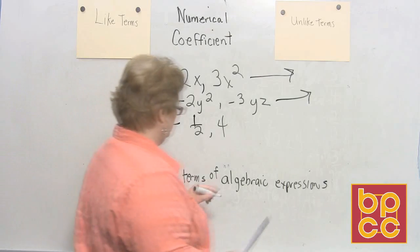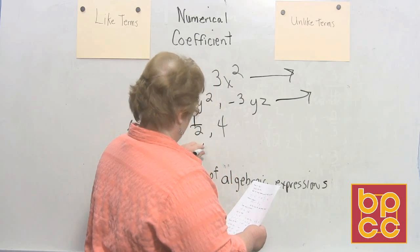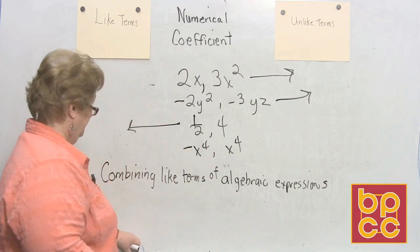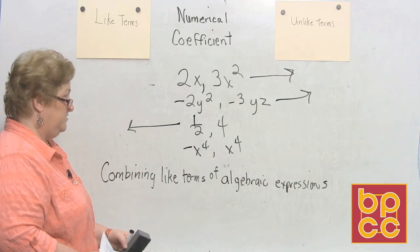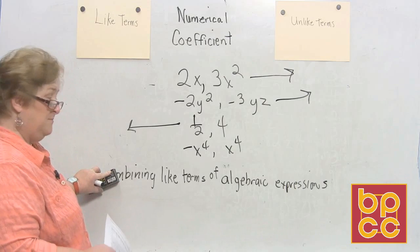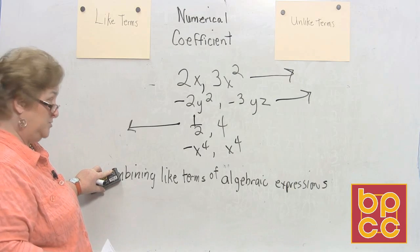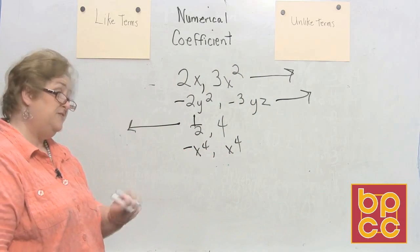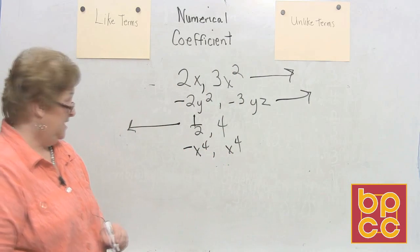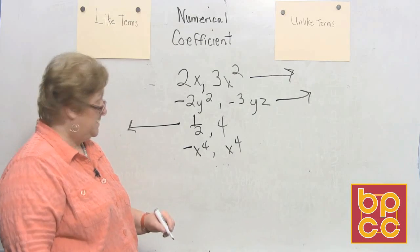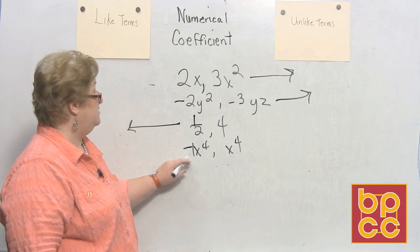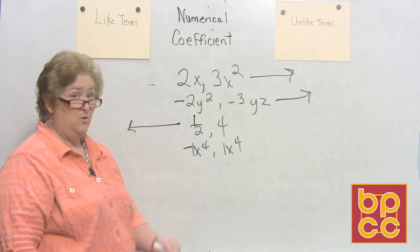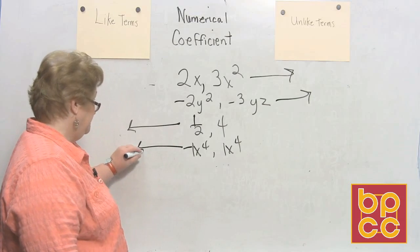Let's try negative x to the fourth and x to the fourth. They're both x's. The coefficient on each one is a negative one and a positive one, and they do have the same exponent. So these are like terms.